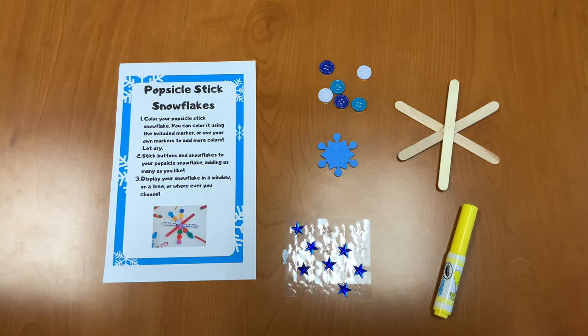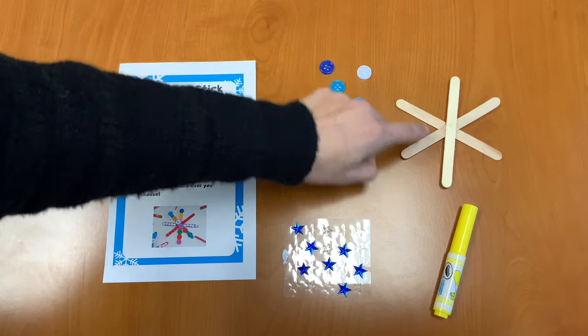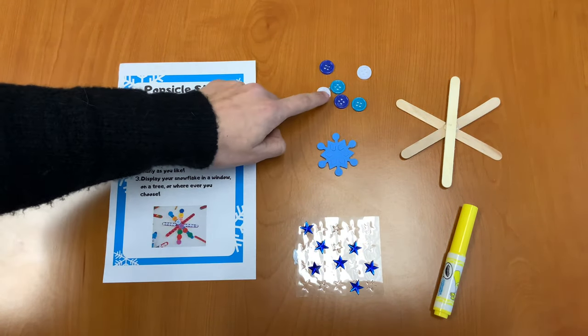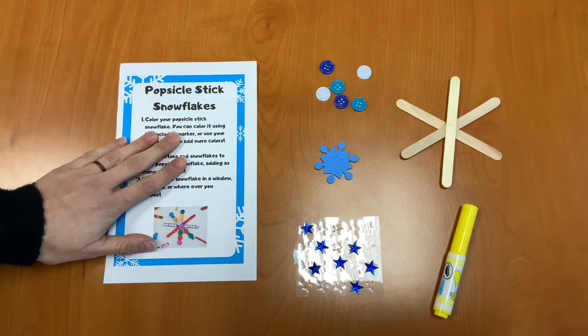So let's get started and take a look at what we have in our Take and Make kits. In your Take and Make kit you should have a wooden snowflake, a marker, some stickers, some buttons, and some snowflakes. They're all sticky backs, they're all stickers, and your instructions.